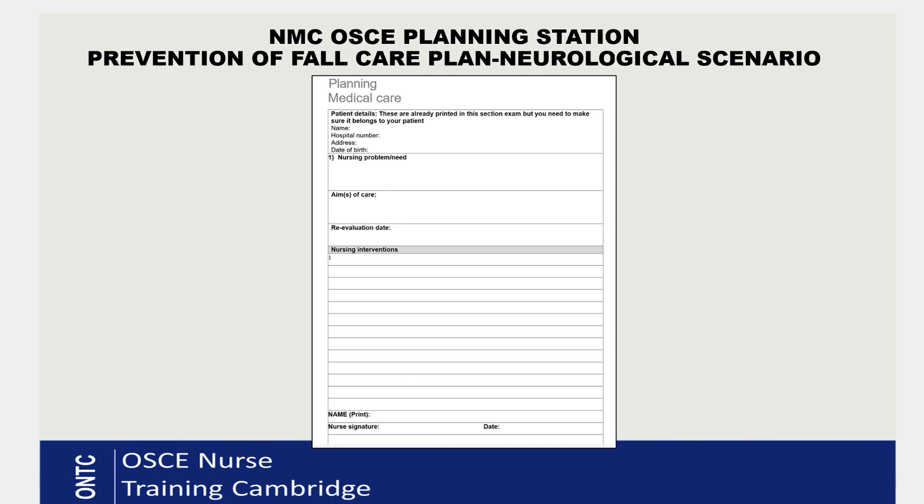Based on your nursing assessment, you're asked to produce a nursing care plan for two relevant nursing needs suitable for the next 24 hours. It's a silent station. You need to write clearly and legibly, and you have 14 minutes to complete it. Today I'm going to show you one care plan — the risk of fall care plan — for a neurological patient.